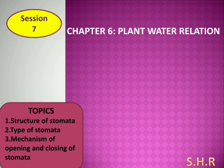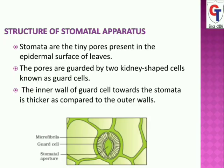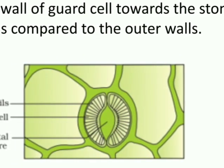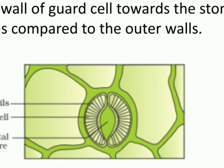The first topic is the structure of stomata. What is stomata? Stomata are the minute apertures or openings present on the young leaves, or on the leaves or on a young stem. The stomata is guarded by two specialized cells called guard cells.